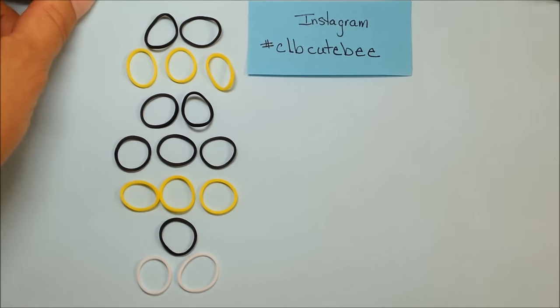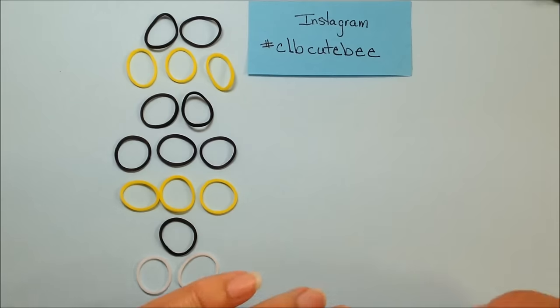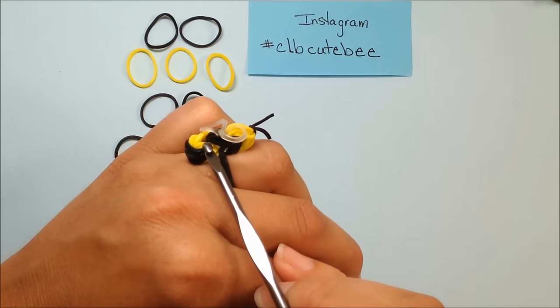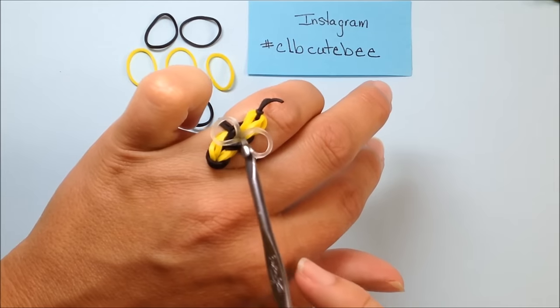Let's start the lesson off with me telling you that you're going to need eight black bands, six yellow bands, and two bands in the colors of your wing.